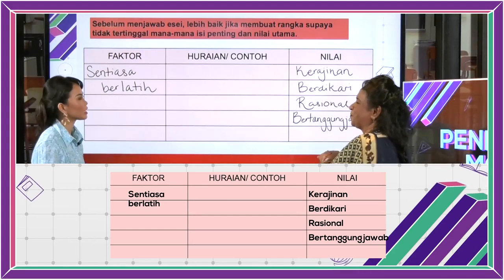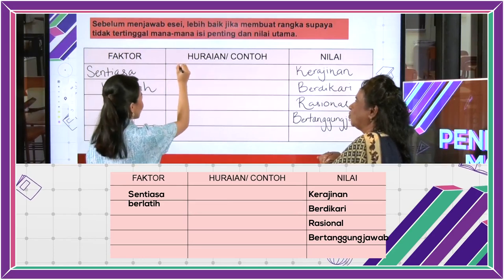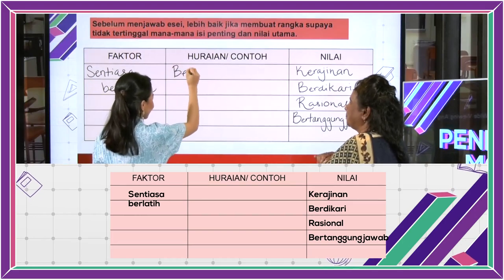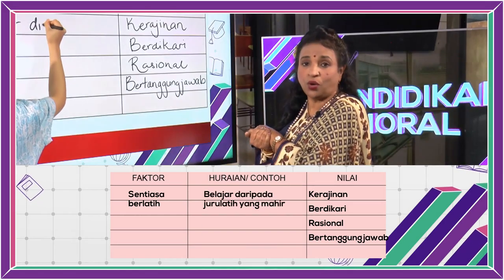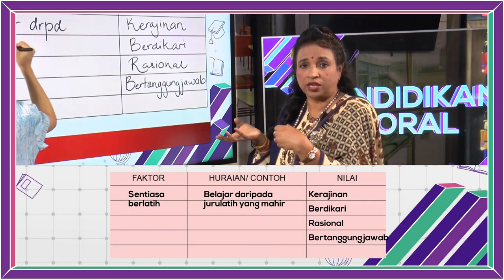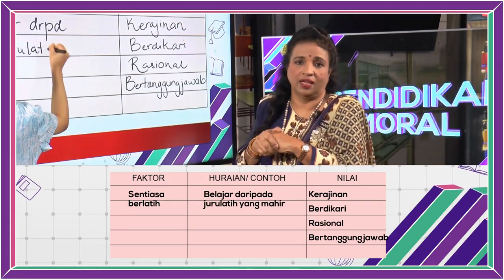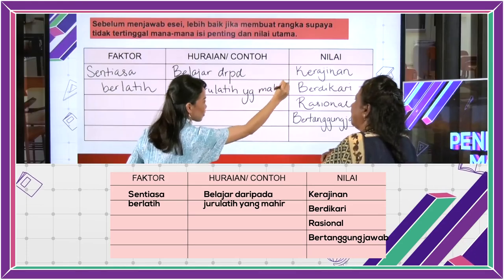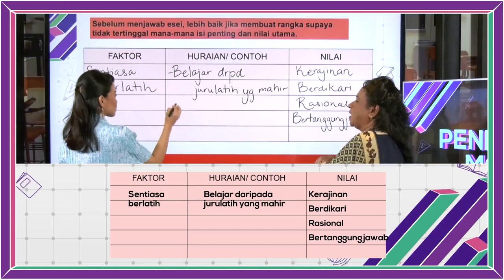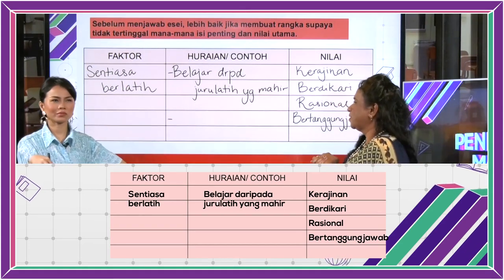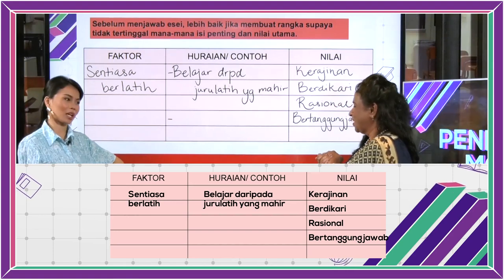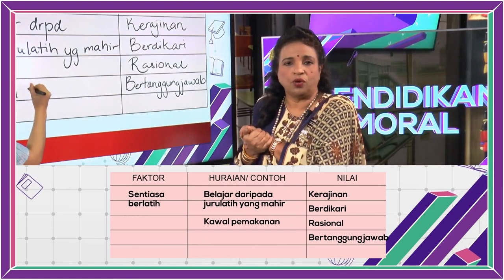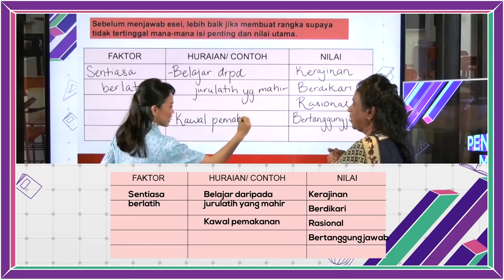Kita perlu siapa untuk melatih kita? Kita perlu jurulatih — bukan jurulatih tepi jalan, jurulatih yang mahir. Belajar daripada jurulatih yang mahir. Hanya jurulatih yang mahir yang boleh mengajar kita menjadi seorang atlet yang cemerlang. Selain itu, boleh tak atlet makan aiskrim, makan pizza dan sebagainya? Tidak bolehlah. Jadi kena kawal pemakanan. Selain berlatih, atlet juga perlu kawal pemakanan — banyak yang perlu dikorbankan.